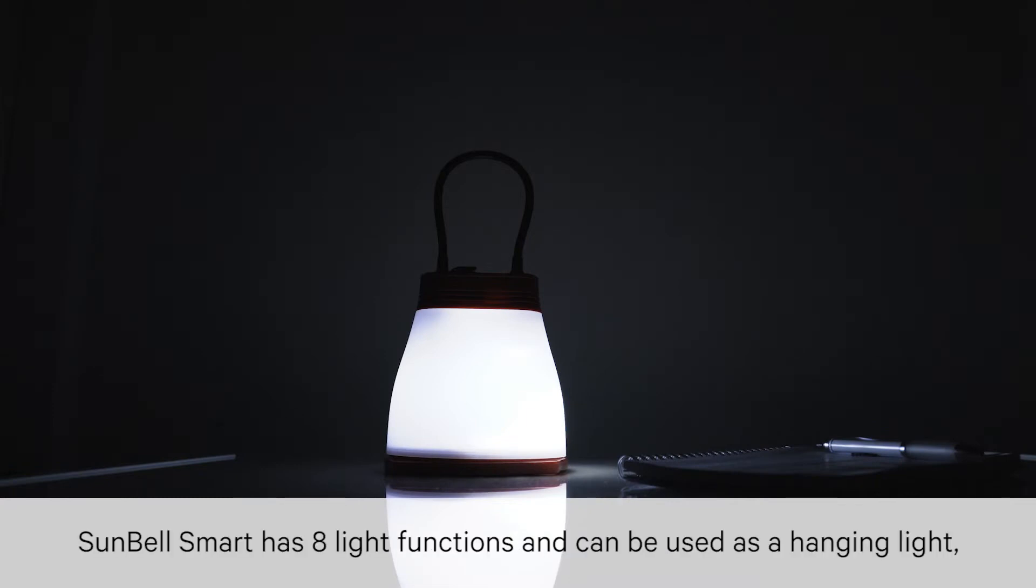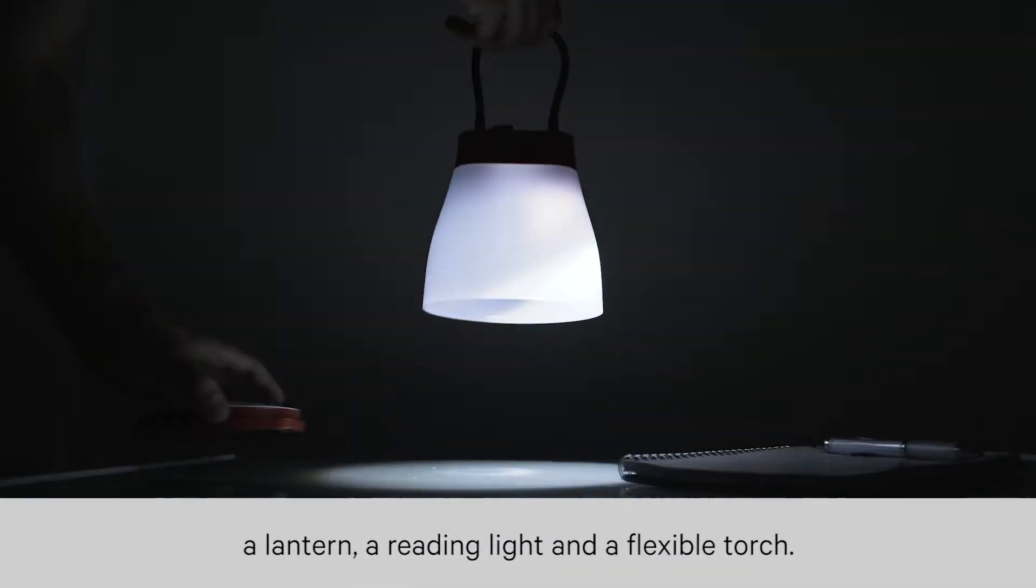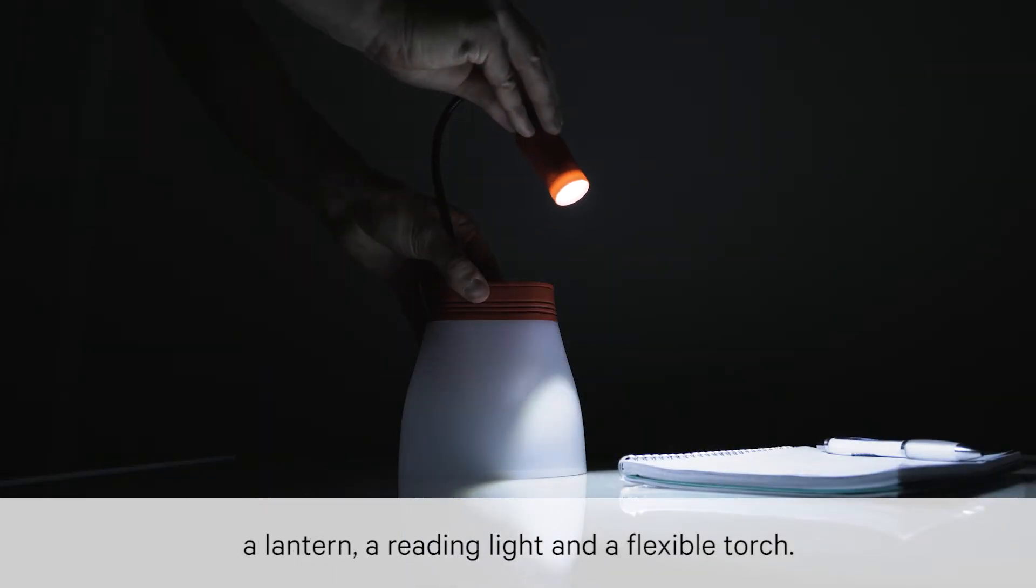Meet Sunbell Smart. Sunbell Smart has eight light functions and can be used as a hanging light, as a lantern, a reading light and a flexible torch.